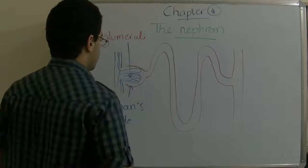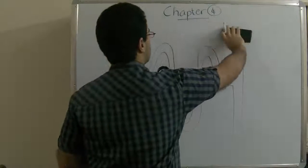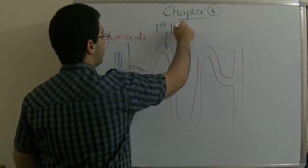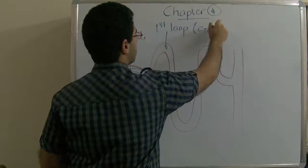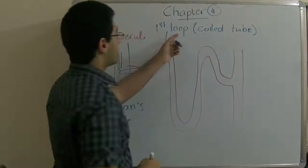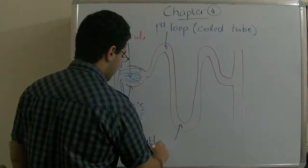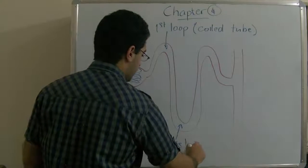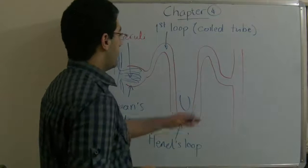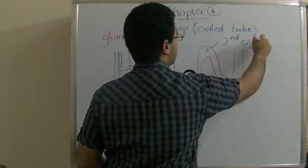So this first loop is called the first loop or the first coiled tube. The second is called Henle's loop, and as we can see, it's U-shaped. It has the shape of a U. Then we have the second coiled tube.